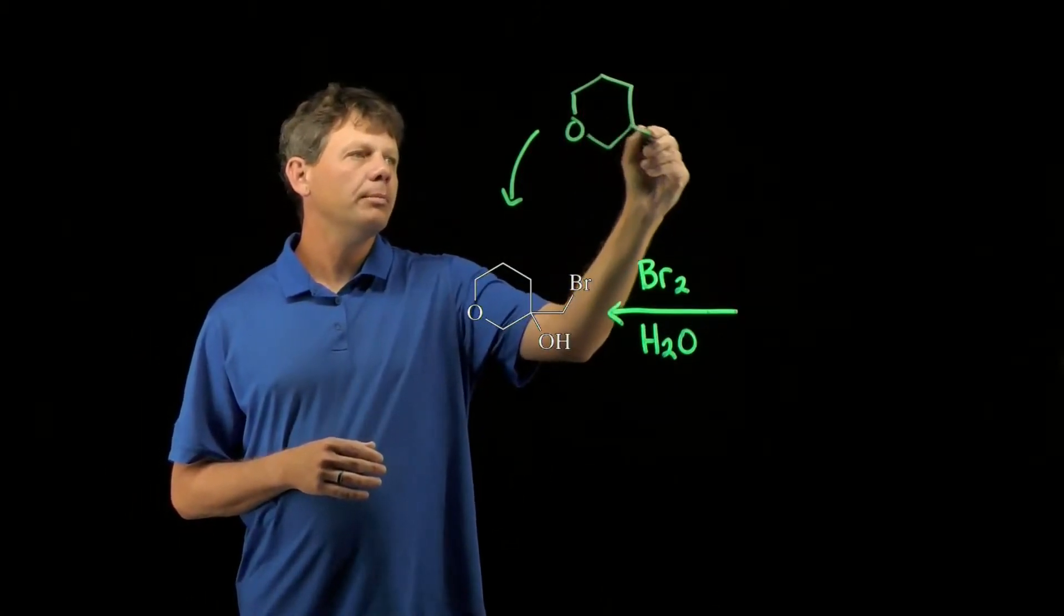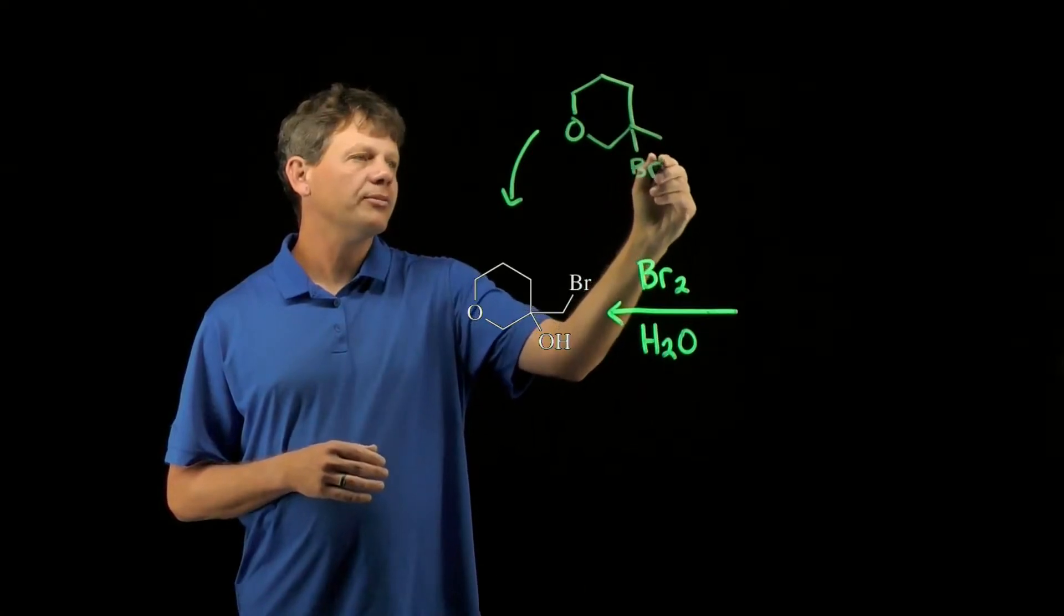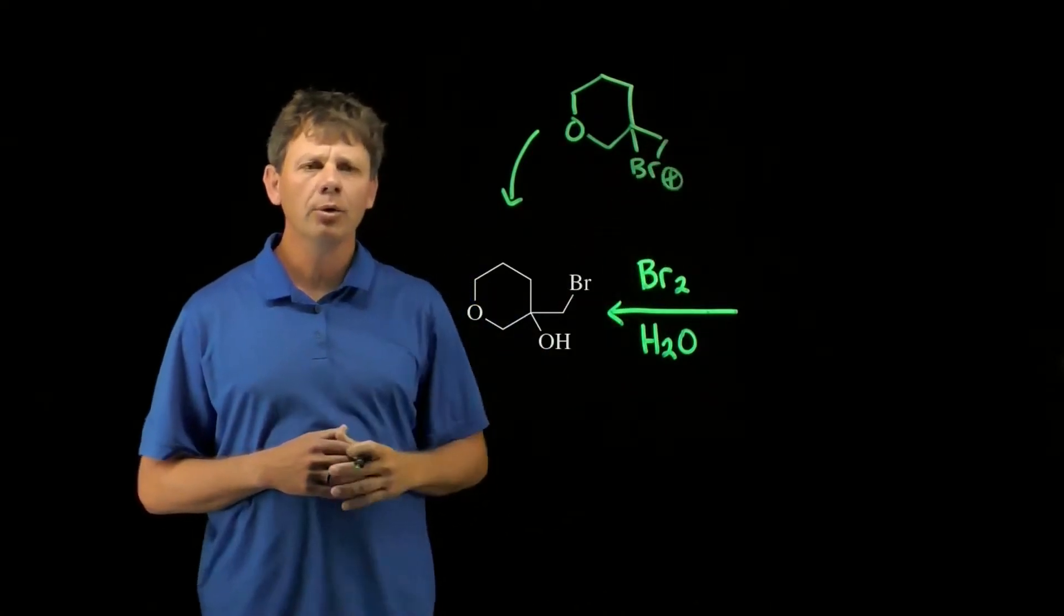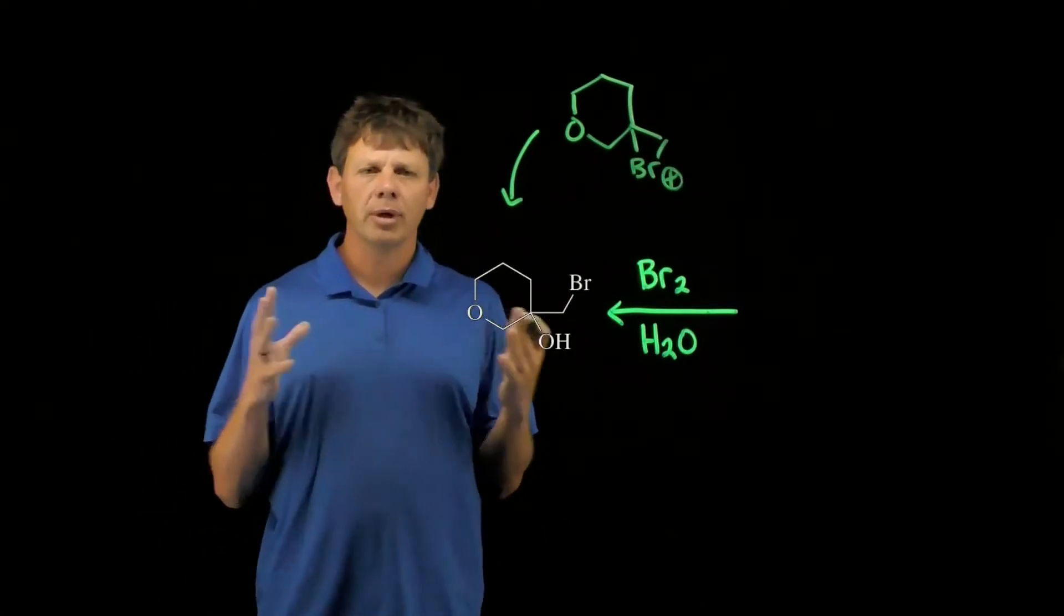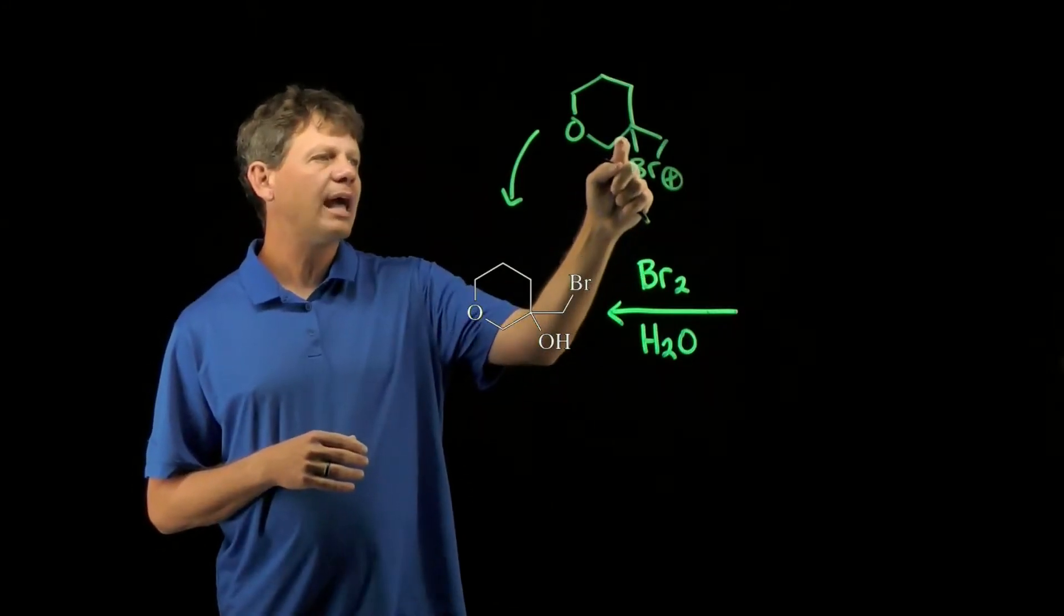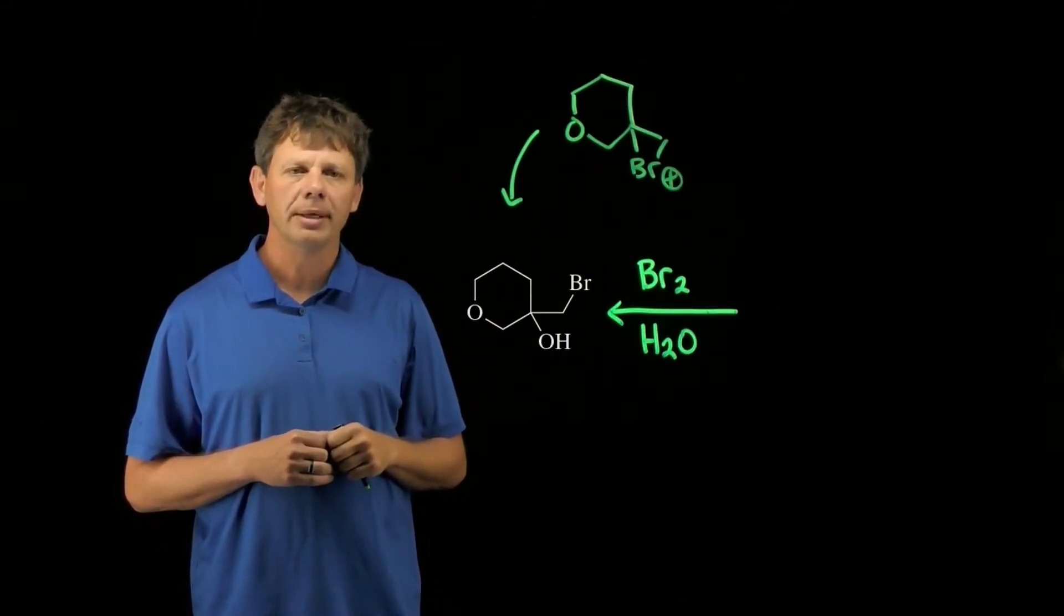That bromonium ion would be between these two carbons, and we know the way this reaction would finish. We're not going to show the mechanism, but water would attack here, pushing the electrons onto the bromine.